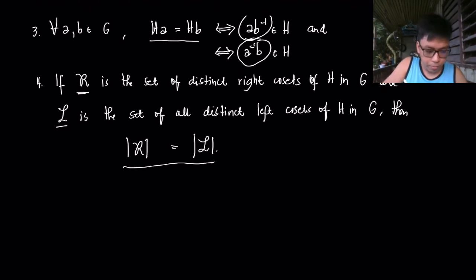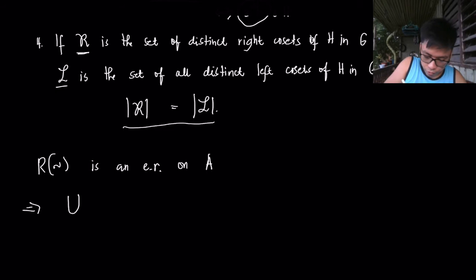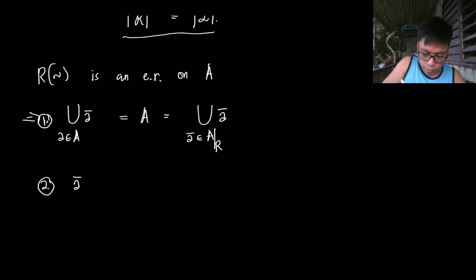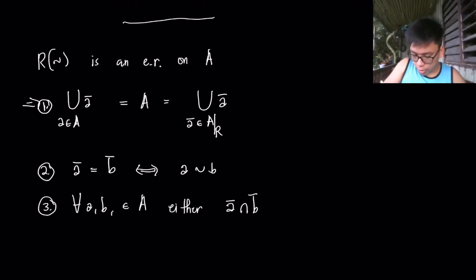Recall from the previous video on equivalence relations: the union of equivalence classes of A, where A is an element of the set, equals the full set. Also, Ā = B̄ if and only if A is related to B. And for every A, B in the set, either Ā ∩ B̄ is empty or Ā equals B̄. These statements prove claims 1, 2, and 3 of the theorem.